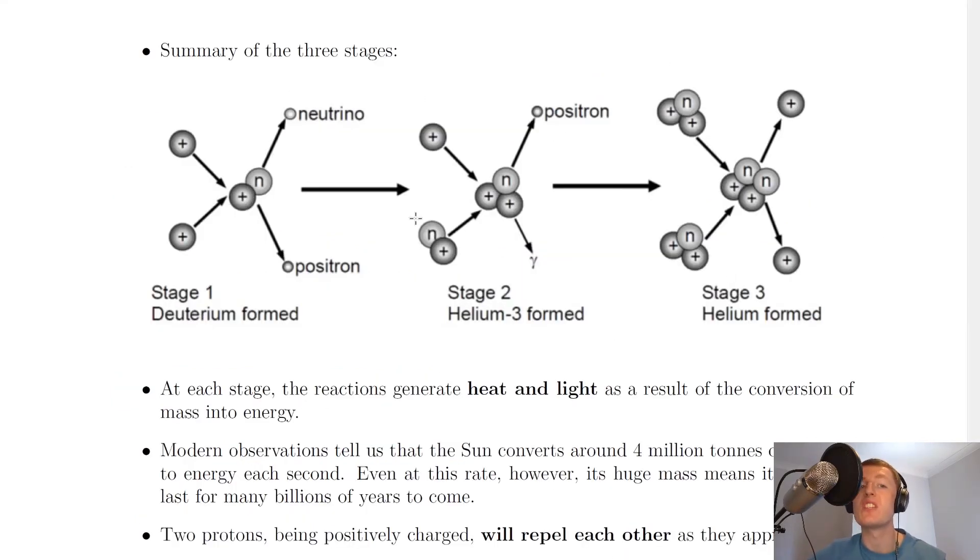So here's a summary of the three stages. In stage one, we get two protons combining to form deuterium. In stage two, we get one proton combining with deuterium to form helium-3. And in stage three, we get two helium-3 atoms fusing together to form helium-4. That's the main aim of getting from hydrogen into helium for nuclear fusion.